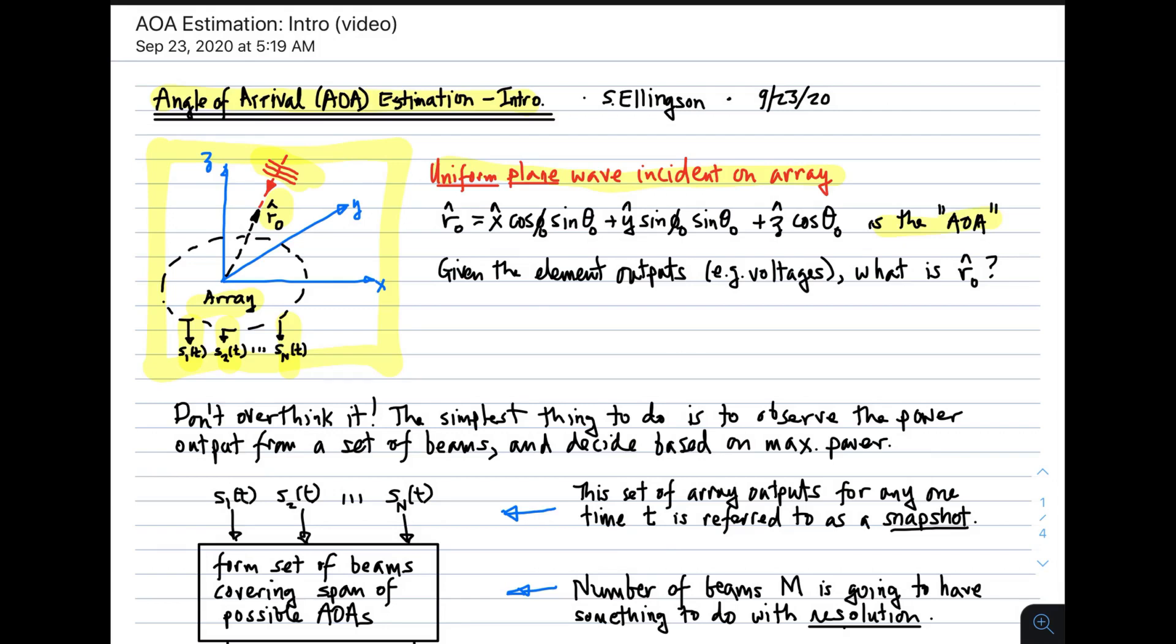Just to remind you, a general expression for r hat sub nought, given the angles theta nought and phi nought, is this one here, which you can find in any introductory textbook covering vectors. So the question we would like to answer is, given the element outputs, for example the voltages, what is the direction of arrival?